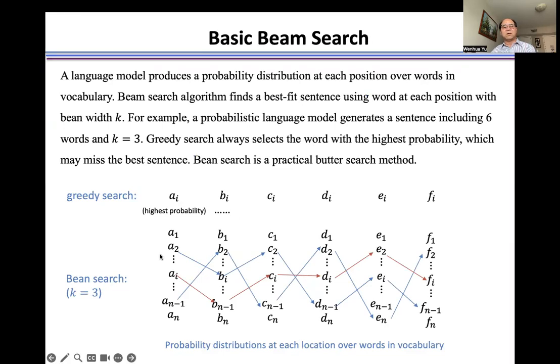For example, a language model predicts a sentence with six words. The greedy search method picks one word with the maximum probability as the word at the current location to generate a sentence. That sentence may not be the best fit sentence to the ground truth sentence.